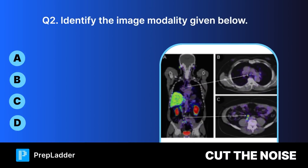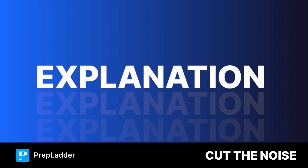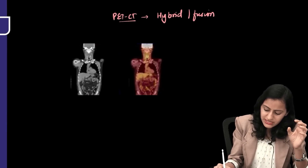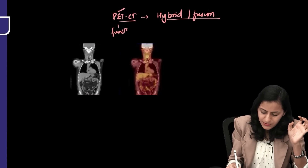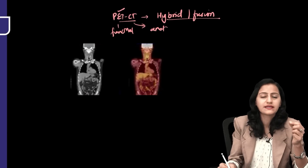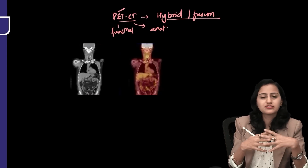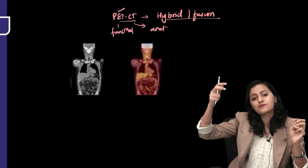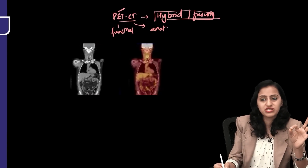Question two: Identify the image modality. The correct answer is PET-CT. PET-CT is an example of hybrid or fusion imaging. PET is the functional component — a nuclear medicine scan. CT is an anatomical scan. The advantage is that CT provides excellent anatomical resolution, allowing precise localization of areas of FDG uptake, such as the exact spinal level showing increased uptake.